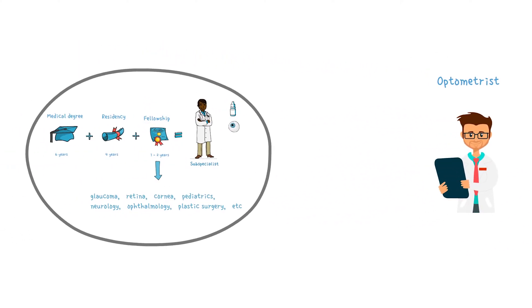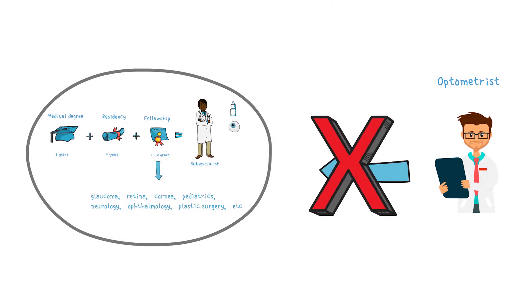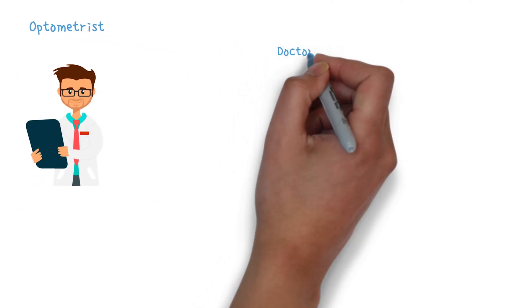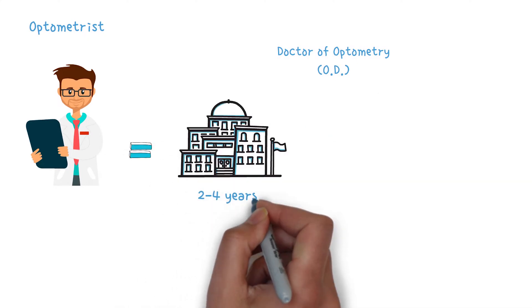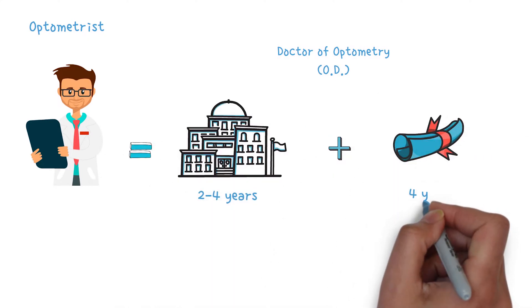An optometrist is not a physician. An optometrist earns the degree of doctor of optometry by completing two to four years of undergraduate study and four years of optometry school.